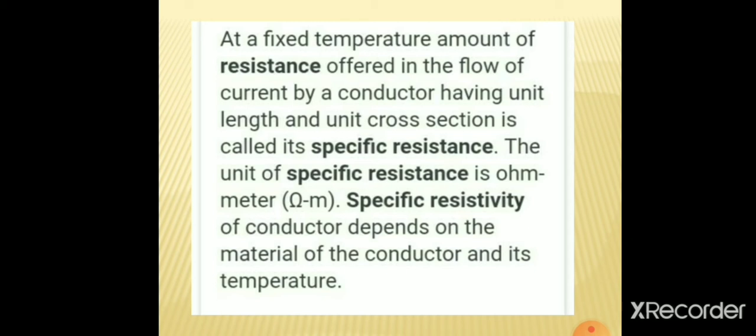At a fixed temperature, the amount of resistance offered in the flow of current by a conductor having unit length and unit cross-section is called its specific resistance. Specific resistance is the other name for resistivity. The unit of specific resistance is ohm meter. Specific resistance of a conductor depends on the material of the conductor and its temperature.